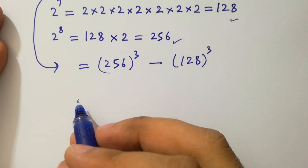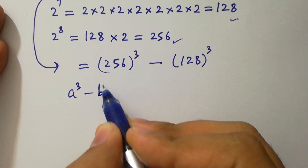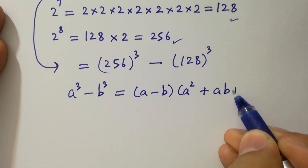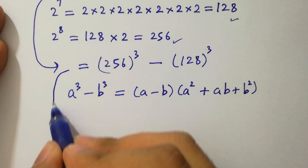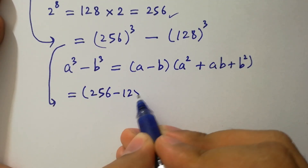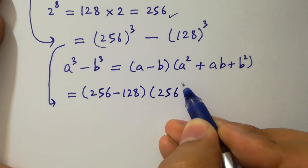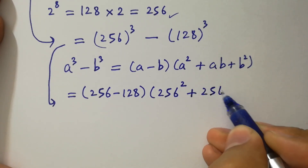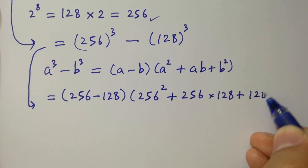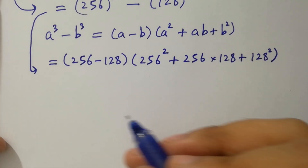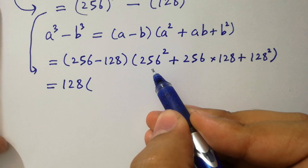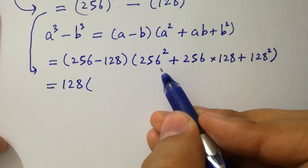In the next step, apply the formula for a cubed minus b cubed, which equals (a minus b)(a squared plus ab plus b squared). So it will be (256 minus 128) times (256 squared plus 256 times 128 plus 128 squared). Here 256 minus 128 is 128.